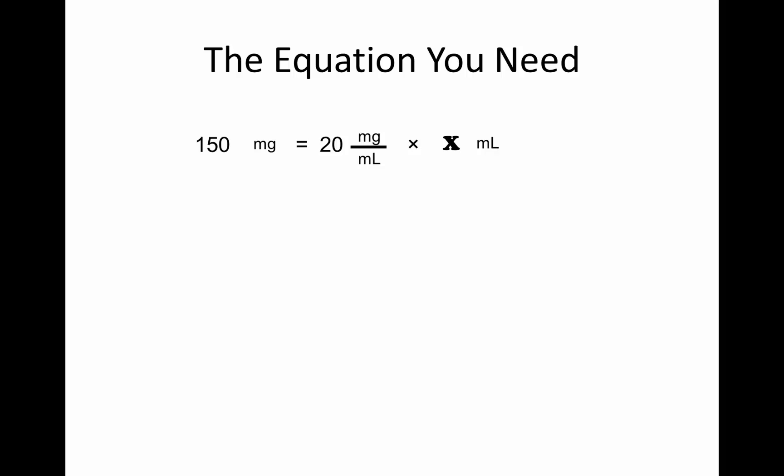So, returning to the equation we need, we have 150 mg equals 20 mg per milliliter times x ml. Let's solve for x. And that's going to be x ml equals 150 mg divided by 20 mg per mil. Now, the way that we got from the upper equation to the lower is, first of all, we just move the x ml to the other side, we essentially are solving for this side by dividing 150 mg by 20 mg per mil. So, we're dividing that part and then we're moving things across from one side to another.